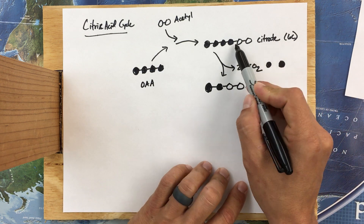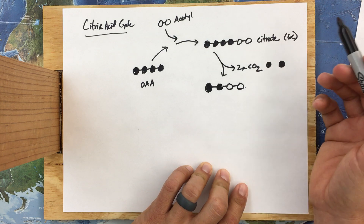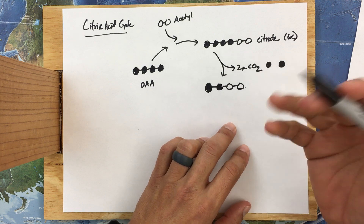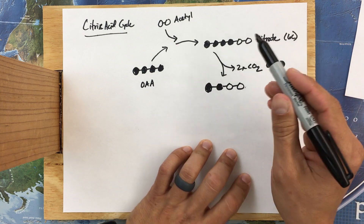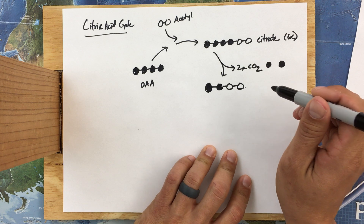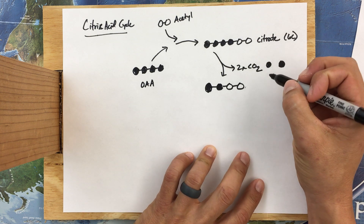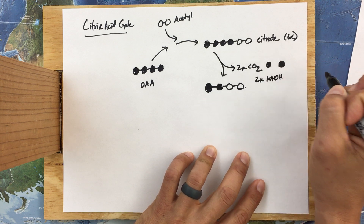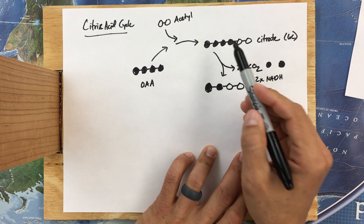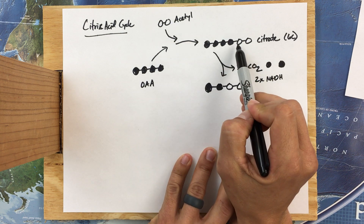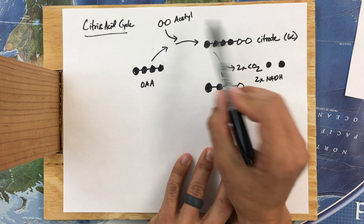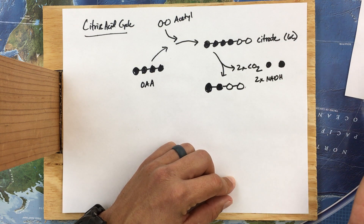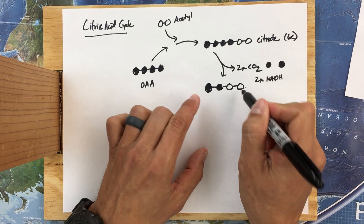When we break these covalent bonds and go to a smaller, more stable molecule, energy becomes available — specifically in the form of high-energy electrons. We're going to use a carrier molecule called NADH, just like we saw before, and it is going to carry away two of the electrons that used to be inside citrate, which in turn came from the acetyl. We've captured those high-energy electrons so we can take them somewhere else to do the next set of reactions.